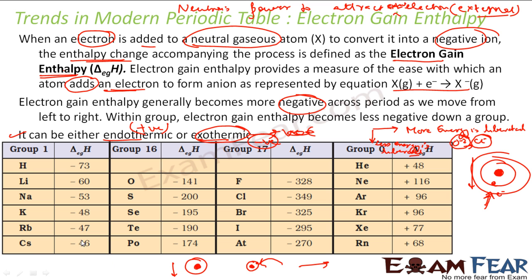Looking at the table: noble gases have a positive electron gain enthalpy because they are stable and do not want to gain extra electrons. If you still want to add an electron to a noble gas, you must provide energy, which is why their values are positive. Other elements generally have negative values because they are ready to attract electrons.